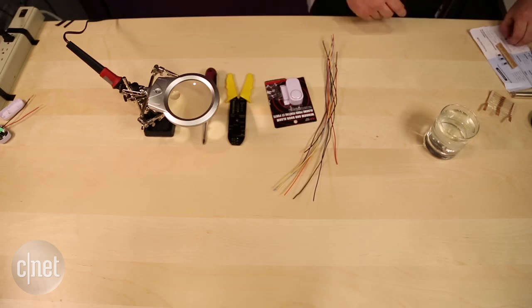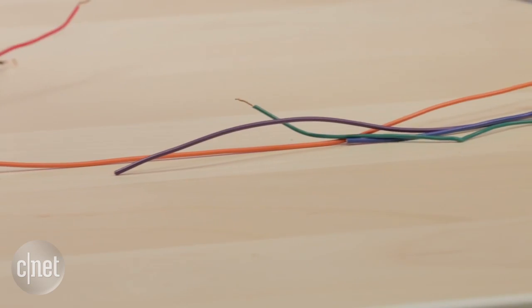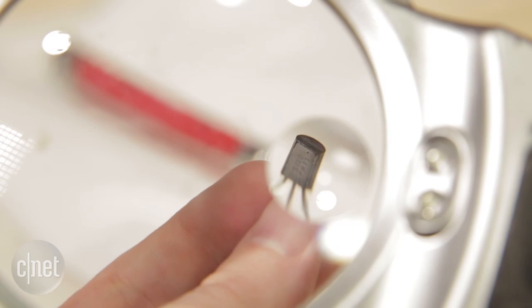First things first you're gonna have to get your supplies. That means you're gonna pick up a door window sensor, some electrical tape, some copper wire, a MOSFET, and a resistor.